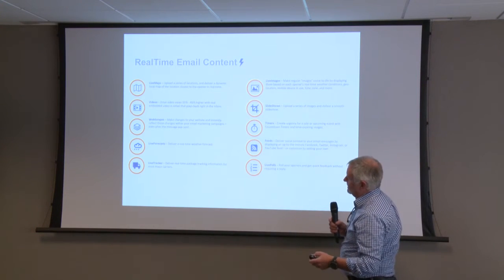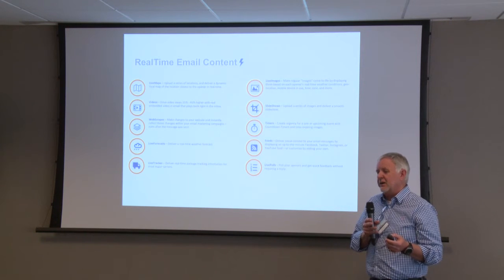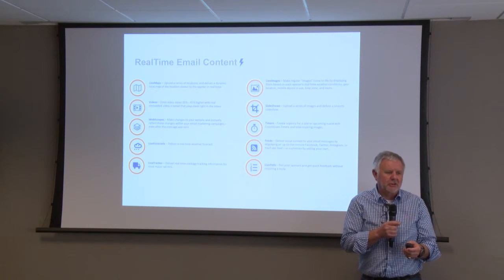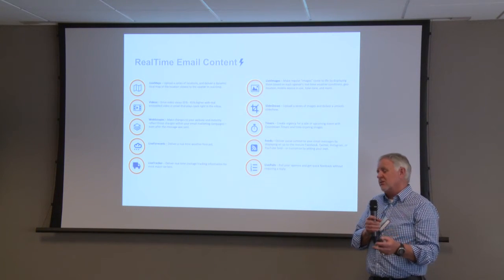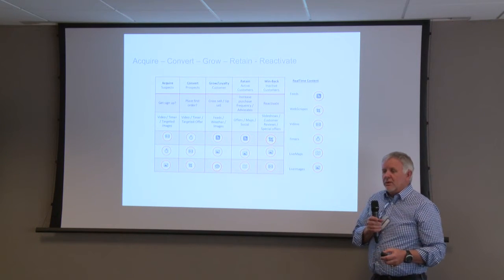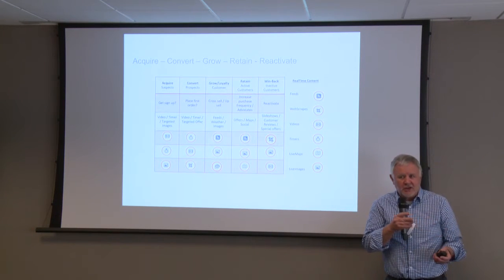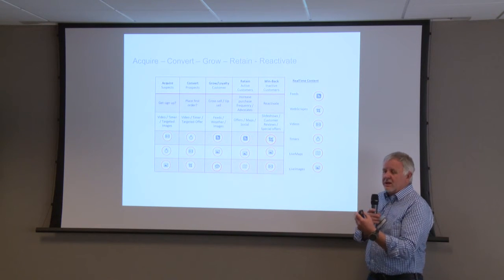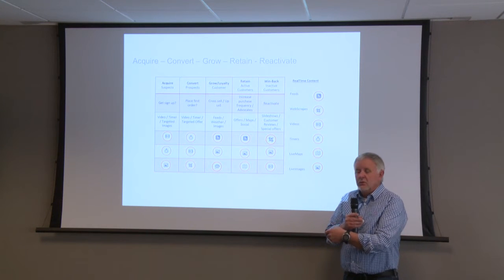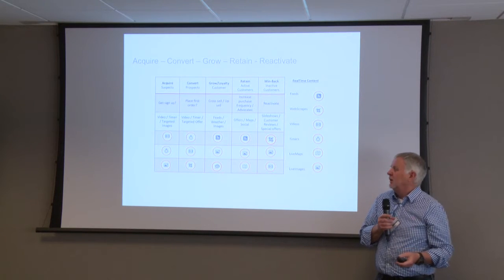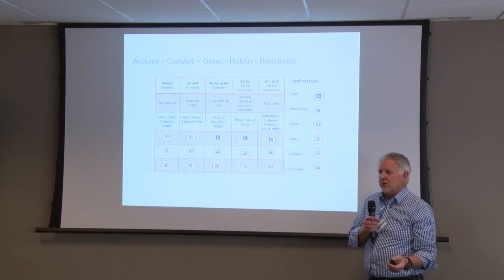We've already had a great example of video. We own a global patent that detects the device, the email client, and the bandwidth of the recipient. We have 12 different video files of your video in the cloud and deliver the relevant result on the fly. If you open on one device in the morning and a different device or email client in the afternoon, you'll potentially get a different result — but it will always be a great result, you'll never get a broken video. When we engage with people, and Adestra is one of our key partners in the UK, the first questions they're going to ask are: what is it you're actually trying to achieve in the customer journey with the particular emails you're considering putting dynamic elements in?